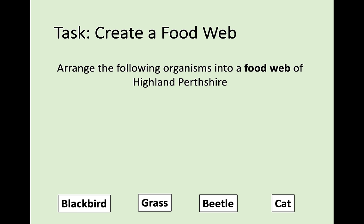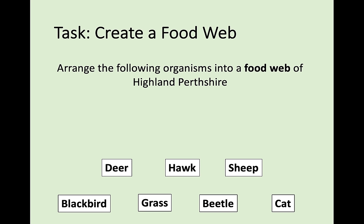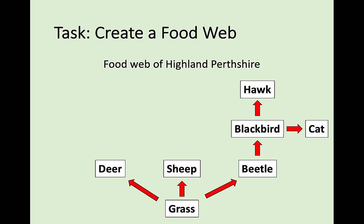Here's another task: using the organisms blackbird, grass, beetle, and cat — and adding deer, hawk, and sheep — create a food web. The answer: grass gets eaten by the beetle, deer, and sheep. The blackbird eats the beetle and can be eaten by both the cat and the hawk. This shows energy flowing in multiple directions, making it more complex than a single food chain.